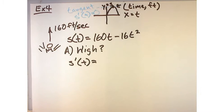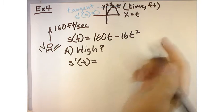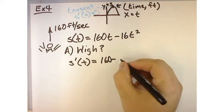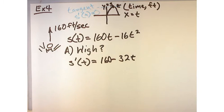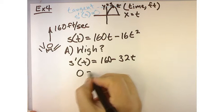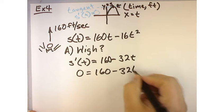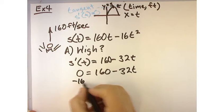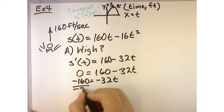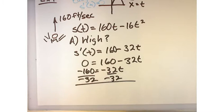So what is S prime of T? Well, the derivative of S of T is going to be 160 minus 32T. So now to find when this equals zero, I'm going to say zero is equal to 160 minus 32T. I get negative 160 equals negative 32T. Divide both sides by negative 32.